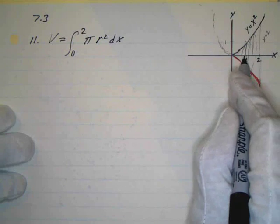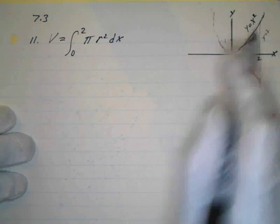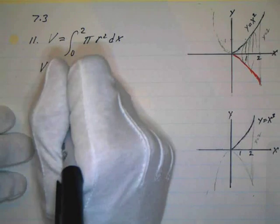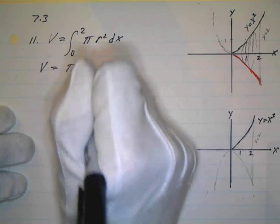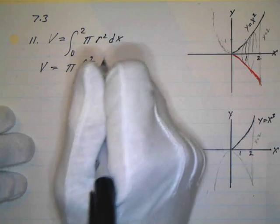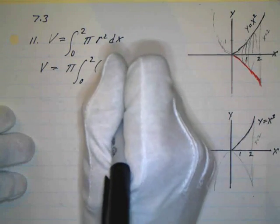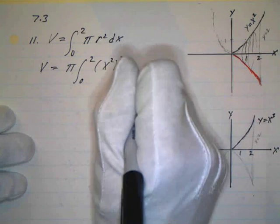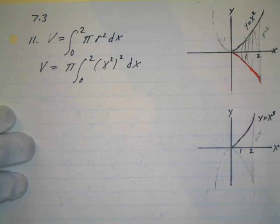We need to find the area of this and we need the radius and the radius is just going to be my x squared so my volume. I can bring the pi out in front and that's going to be the integral from 0 to 2. My radius squared. What's my radius? My radius is x squared.